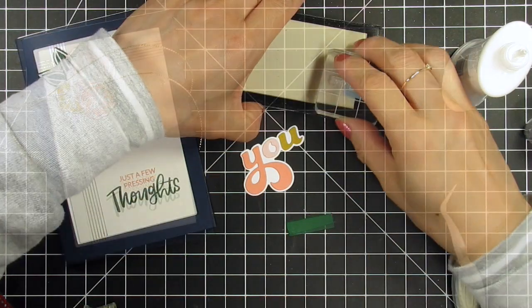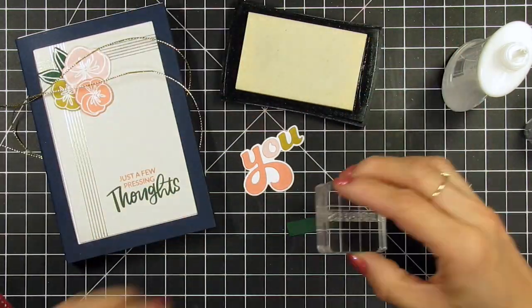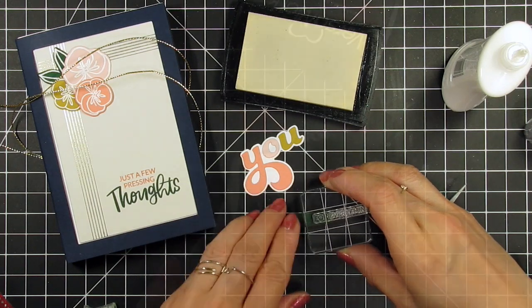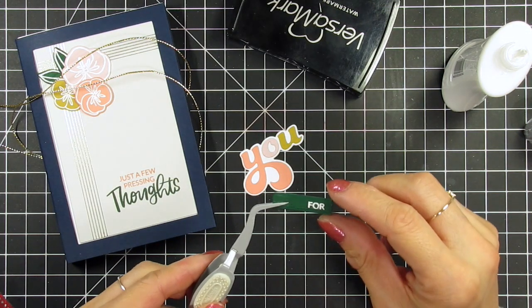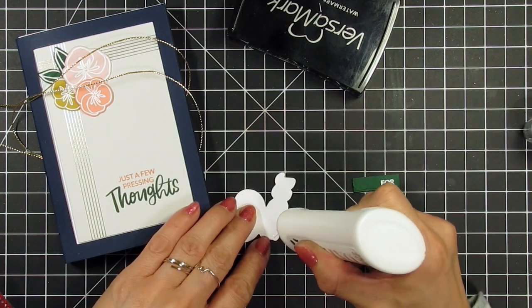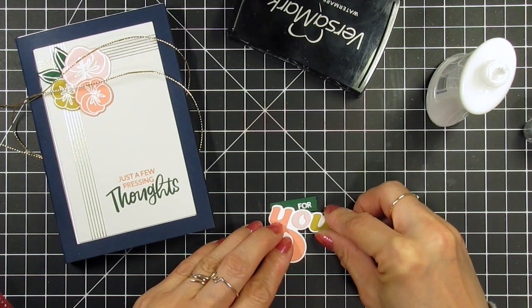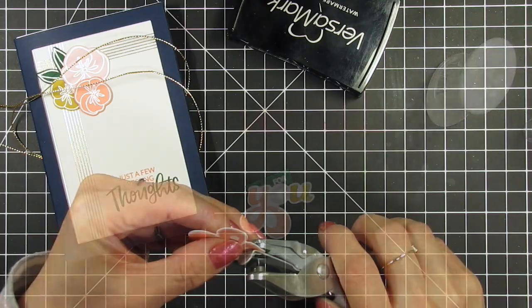I also used the tiny sticker or washi tape die from the shadow box die set so I could heat emboss the word 'for' which completes the little tag. I punched a 1/16th inch hole just above the indent of the letter Y so I could attach it to the gold cord.